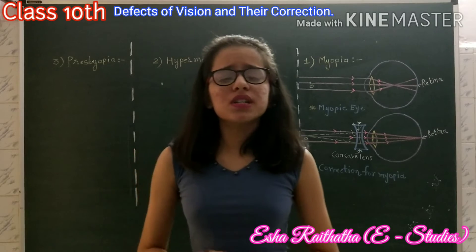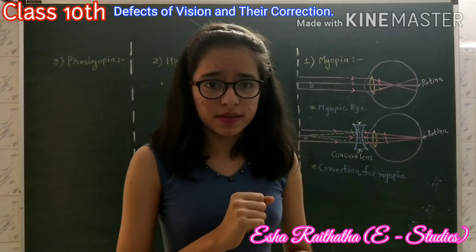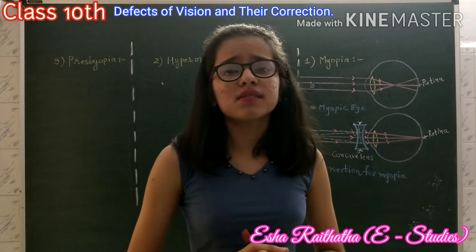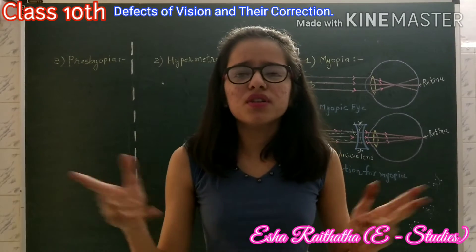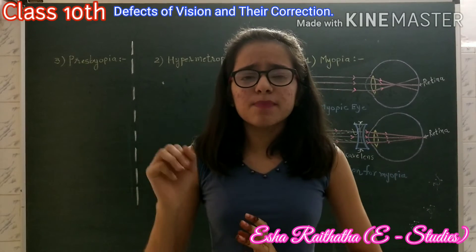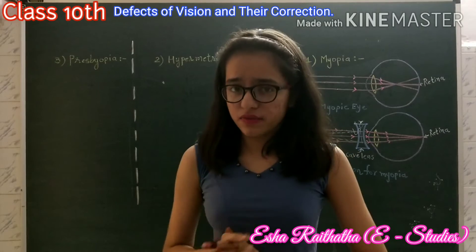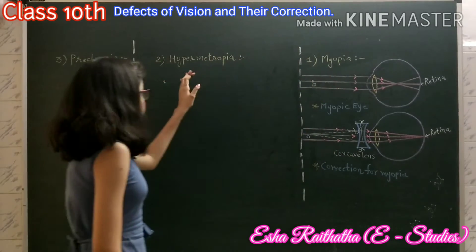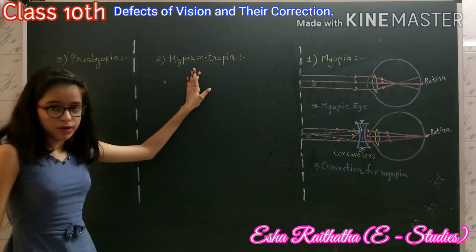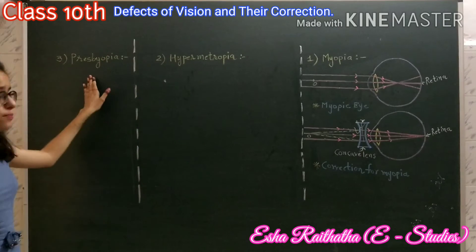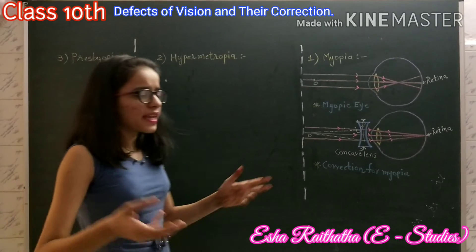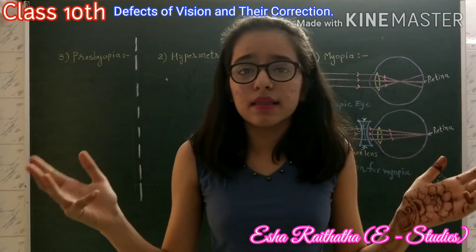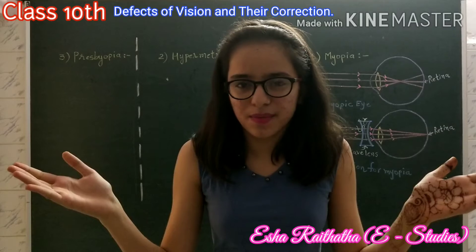Sometimes the eye may gradually lose the power of accommodation. This leads to a condition where a person cannot see objects clearly and the vision is blurred. There are three types of common defects in vision: myopia, hypermetropia, and presbyopia. They can be corrected by the use of suitable spherical lenses.